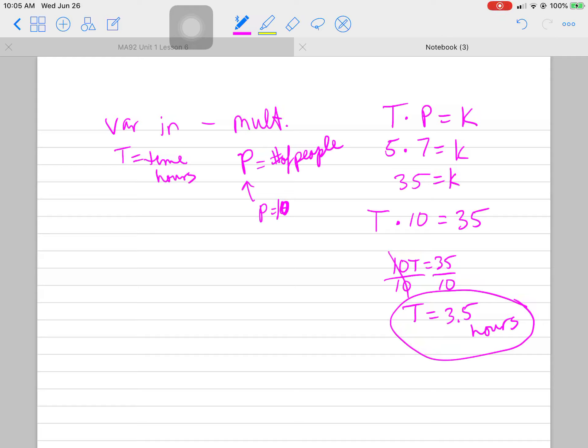It takes seven bricklayers five hours to do it. So it makes sense that it takes 10 less time, right? They're inverse relationships. If P goes up to 10, then five has to go down to 3.5.